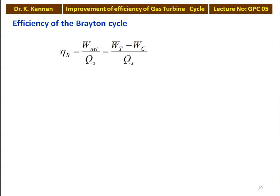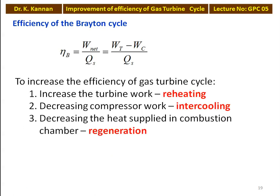We derived the Brayton cycle efficiency — the fundamental equation: efficiency equals net work output divided by heat supply. As an engineer, we have to find the ways and methods to improve the efficiency of the Brayton combustion cycle. There are 3 parameters involved on the right-hand side: turbine work, compression work, and heat supplied. To increase efficiency, we must increase turbine work, decrease compressor work, or decrease the amount of heat supplied in the combustion chamber. Increasing turbine work is done by reheating — reheating is a modification of the basic cycle.